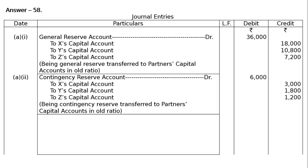That is a credit balance that is debited for nullification. To X's capital account Rs.3,000; to Y's capital account Rs.1,800; to Z's capital account Rs.1,200. Being Contingency Reserve transferred to partners' capital accounts in old ratio. Contingency Reserve is a credit balance and undistributed profit — debited for cancellation and credited to X's, Y's and Z's capital accounts in old profit sharing ratio.